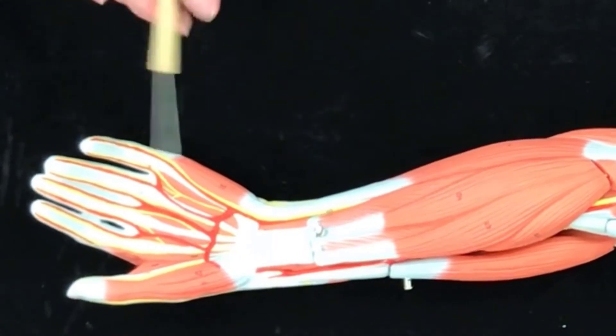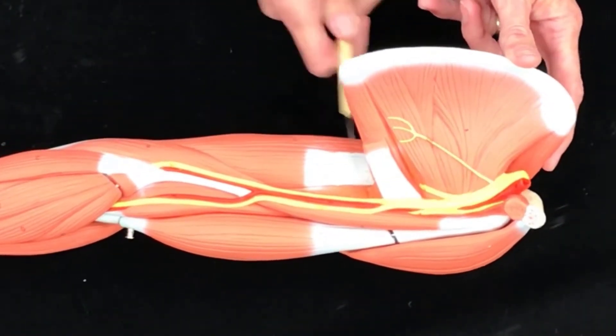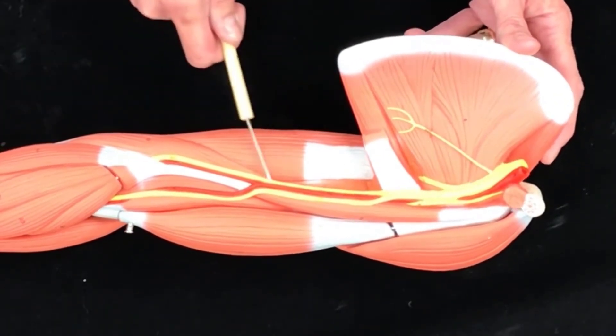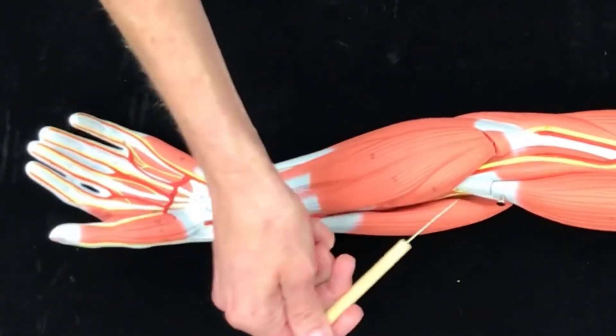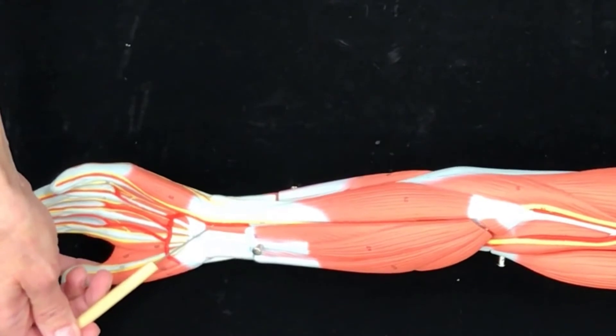All right, so let's do these again. We had axilla armpit, antecubital, inside of the elbow. We have brachial artery that comes down and splits into the radial artery and ulnar artery.